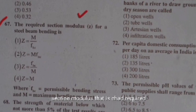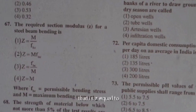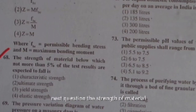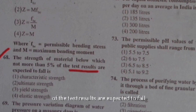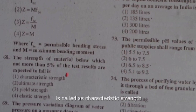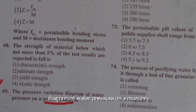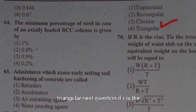The required section modulus Z for a steel beam in bending is given by Z = M/fbc, where M is the maximum bending moment and fbc is the permissible bending stress. The strength of material below which not more than 5% of test results are expected to fall is called characteristic strength. The pressure variation diagram of water pressure on a masonry dam is triangular.